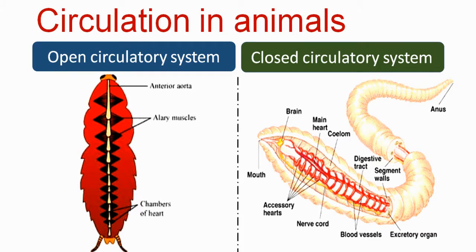The open circulatory system is mainly found in arthropod and mollusca animals — in insects, crabs, prawns, lobster, and cockroach. This is the open circulatory system, found in invertebrate or non-chordate animals.